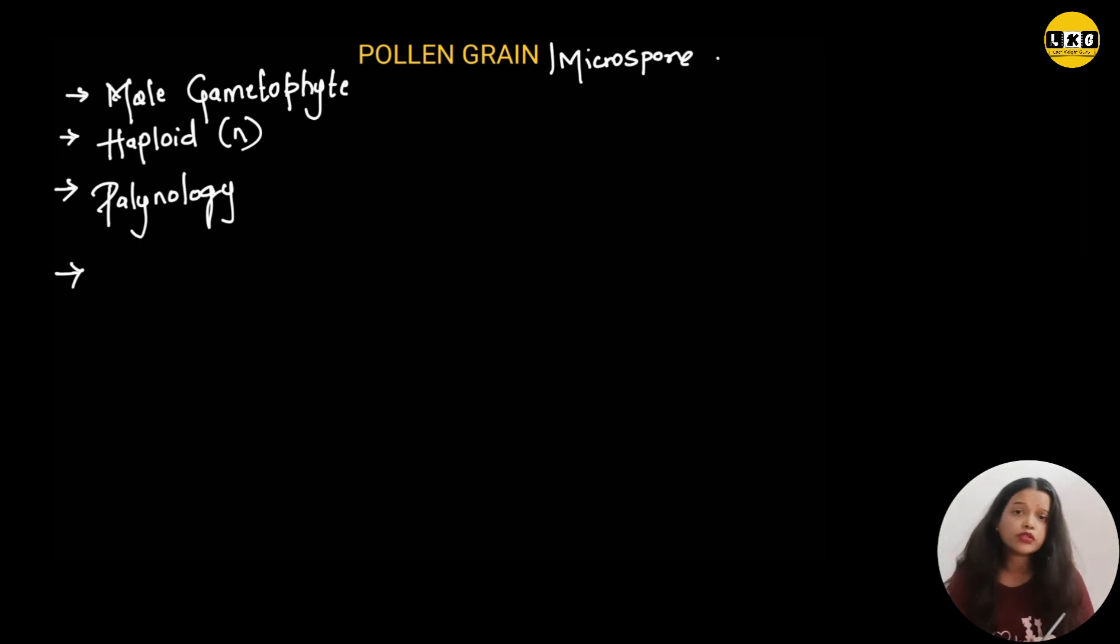So most of the pollen grains have spherical structure. The structure of pollen grain is spherical and it is made up of about 25 to 30 micron in diameter.